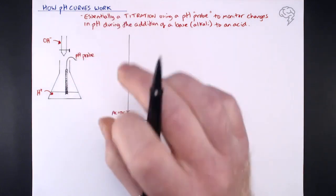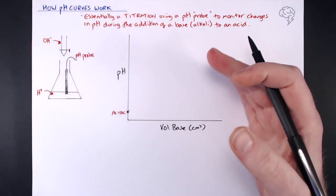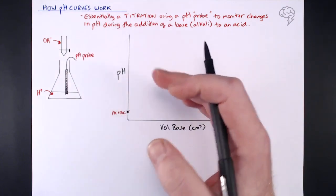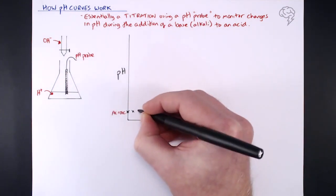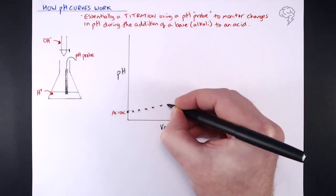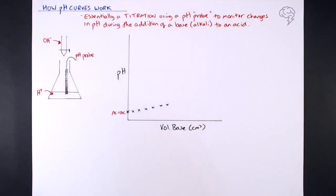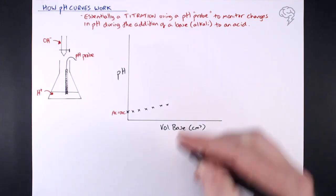Now what we do is we add increments of OH minus. We don't just run it - we put a little bit in, we stop it, we record the pH. So we put a little bit in, we record the pH, a little bit, record the pH, and you're going to get a gradual increase in pH as you add that alkali. Only in increments - you start and stop and record the pH.